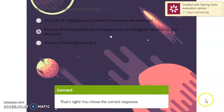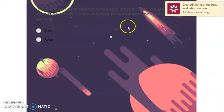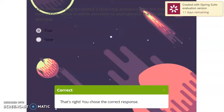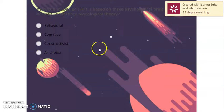Let us continue. In 1965, Robert Gagner created a nine step process called the events of instruction, which correlates to the addressing conditions of learning. True or false? Let us try. Okay, the next question. Congratulations. It's correct.